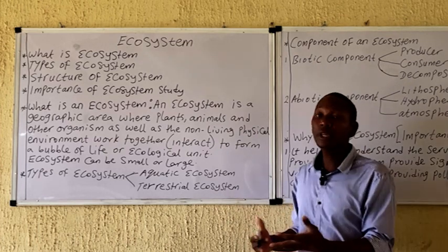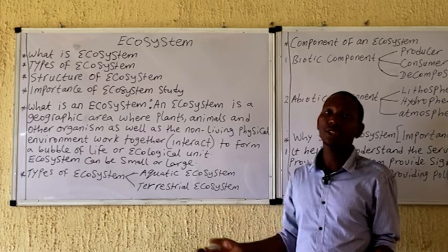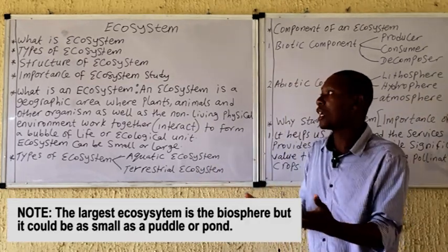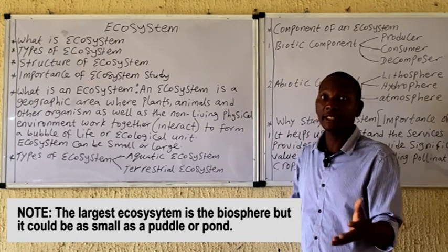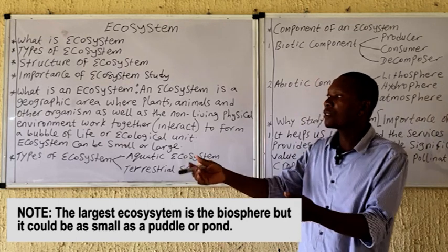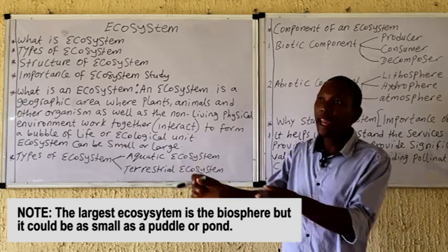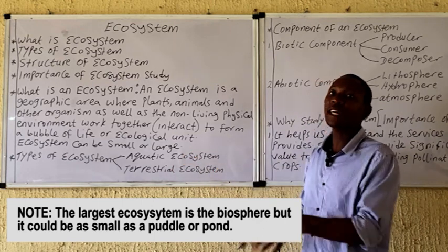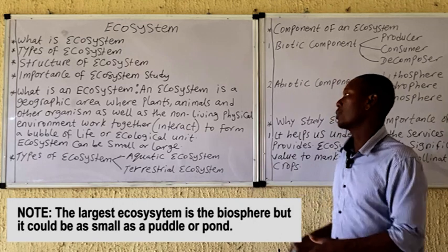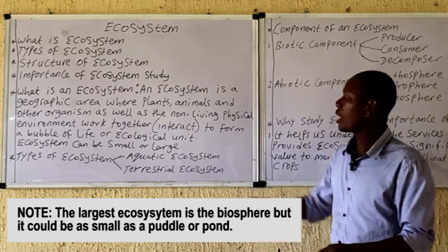An ecosystem can be large, such as a country — the largest ecosystem is actually the planet Earth — or it can be small, such as a little pond, a puddle, or just a stone where some biological activities are being carried out.